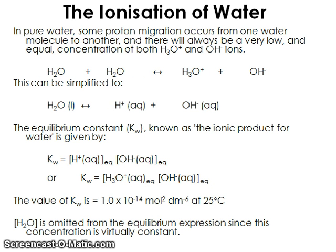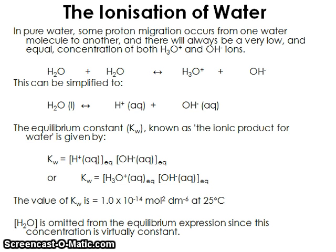So the last thing we need to consider is the ionization of water. In pure water, there's always some migration of the protons between water molecules. So if you've got two water molecules, as shown in this equation, one might end up as a H₃O⁺ ion and one would end up as the OH⁻. So because water can act as a base and an acid, sometimes two molecules of water will act — one as a base and one as an acid.